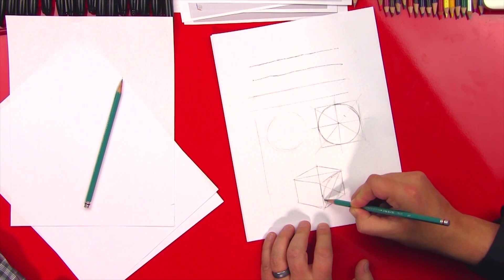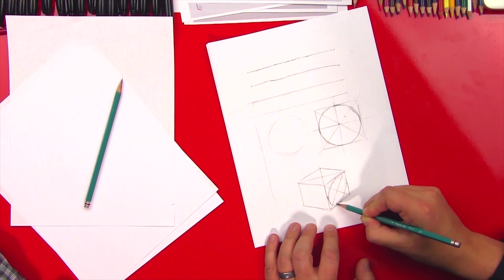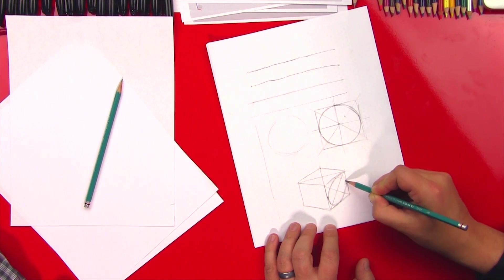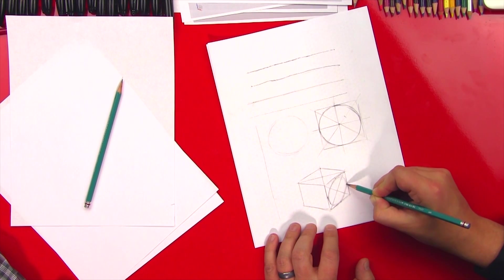But you want to make sure that each of those arcs touches at the center point. And then I would just lightly get that in there. And then as it looks, as I get that line closer and closer to what I want, then I would darken it in. So really the technique is start light and then darken.